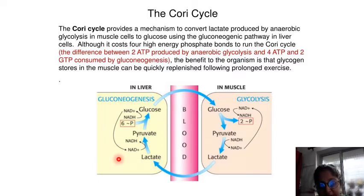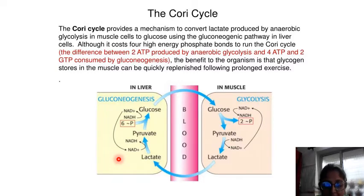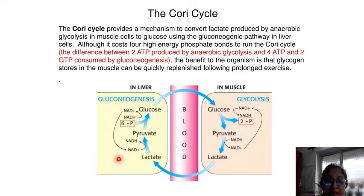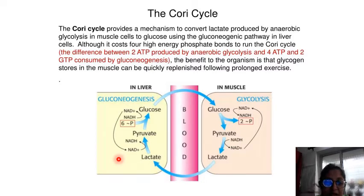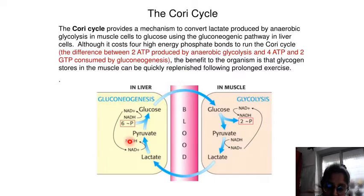During muscular activity, the store of ATP in the muscle needs to be constantly replenished. When the supply of oxygen is sufficient, energy comes from feeding pyruvate — a product of glycolysis — into the citric acid cycle, which ultimately generates ATP through oxygen-dependent oxidative phosphorylation.